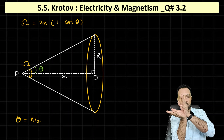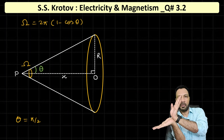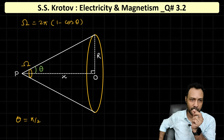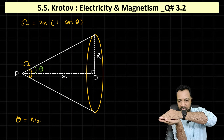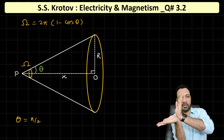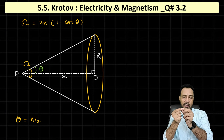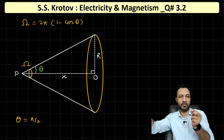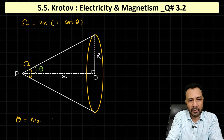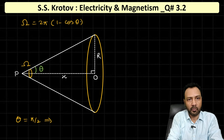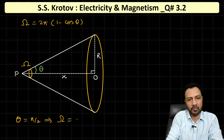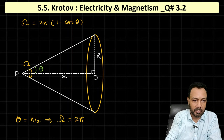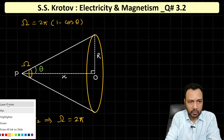We can verify this: if you let theta equal π/2, the cone covers half the universe. The sum of solid angles on that half is 2π steradians. From the formula: ω = 2π(1 − cos(π/2)) = 2π(1 − 0) = 2π steradians. That confirms the formula.